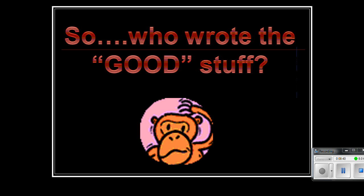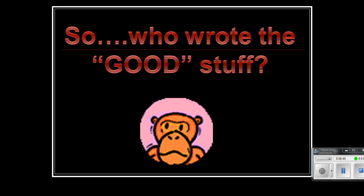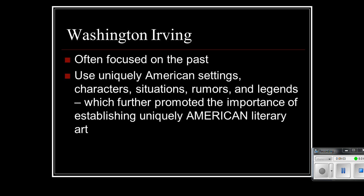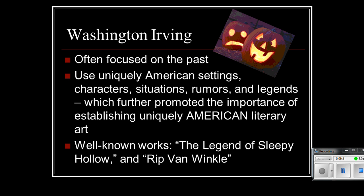So we wonder at this point, who did write the good stuff? Who wrote the stuff that's worth reading, that starts to develop an American style? We're going to start talking about Washington Irving. Irving focused often on that picturesque or the past trait of romanticism, and he used very uniquely American settings. He used American folk characters and started to develop the folk hero in America. He used American situations, American rumors and legends, and that further promoted the importance of establishing that uniquely American literary art form and thus national unity and pride in country. His well-known works are The Legend of Sleepy Hollow — which you probably remember with Ichabod Crane and the Headless Horseman — and also Rip Van Winkle, the man who fell asleep for 40 years, which is actually a political tale.